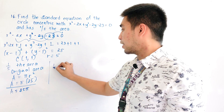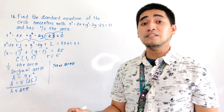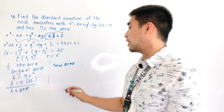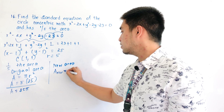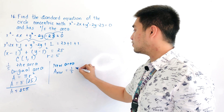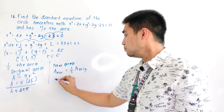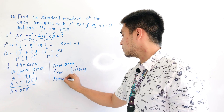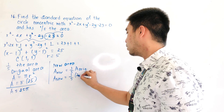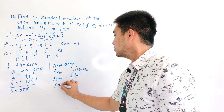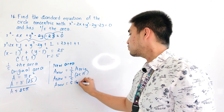So what is our new area? The problem states that it is just one-fifth of the original area. Area of the new circle equals one-fifth of the area of the original, which is one-fifth of 25 pi. That gives us 25 divided by 5, which becomes 5 pi.